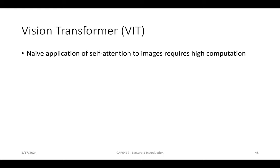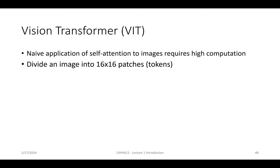As we discussed about attention, if you do attention on each pixel of an image — say 246 by 256 — there'll be a lot of computation. So we cannot do attention at the pixel level. Therefore, this paper proposes dividing an image into 16x16 patches. Each patch becomes a token, and then we can do token-level attention. A token is like a 16x16 patch, similar to a word in NLP.